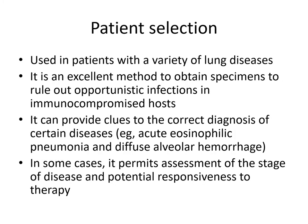Patient selection — how to select patients for doing the procedure. BAL is used in patients with a variety of lung diseases, especially for diagnosing infectious conditions like tuberculosis, fungal infection, and bacterial infections. It is an excellent method to obtain specimens to rule out opportunistic infections in immunocompromised hosts. It can also provide clues to diagnoses like acute eosinophilic pneumonia and diffuse alveolar hemorrhage, and in some cases permits assessment of disease stage and responsiveness to therapy.